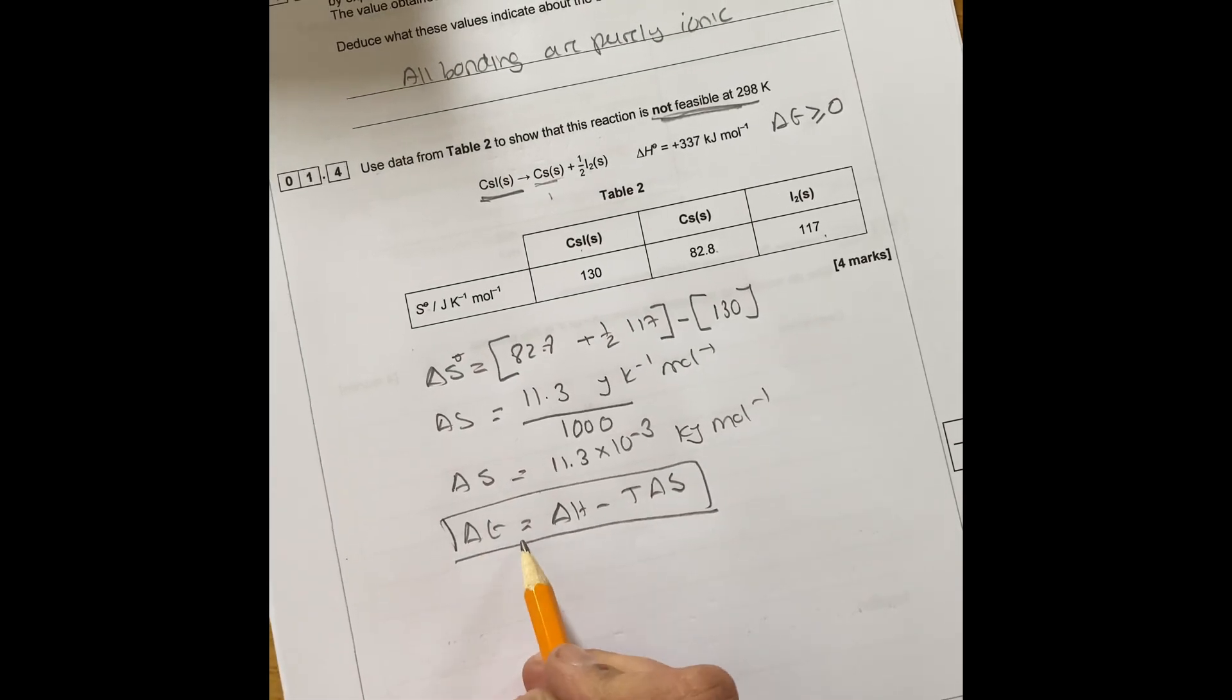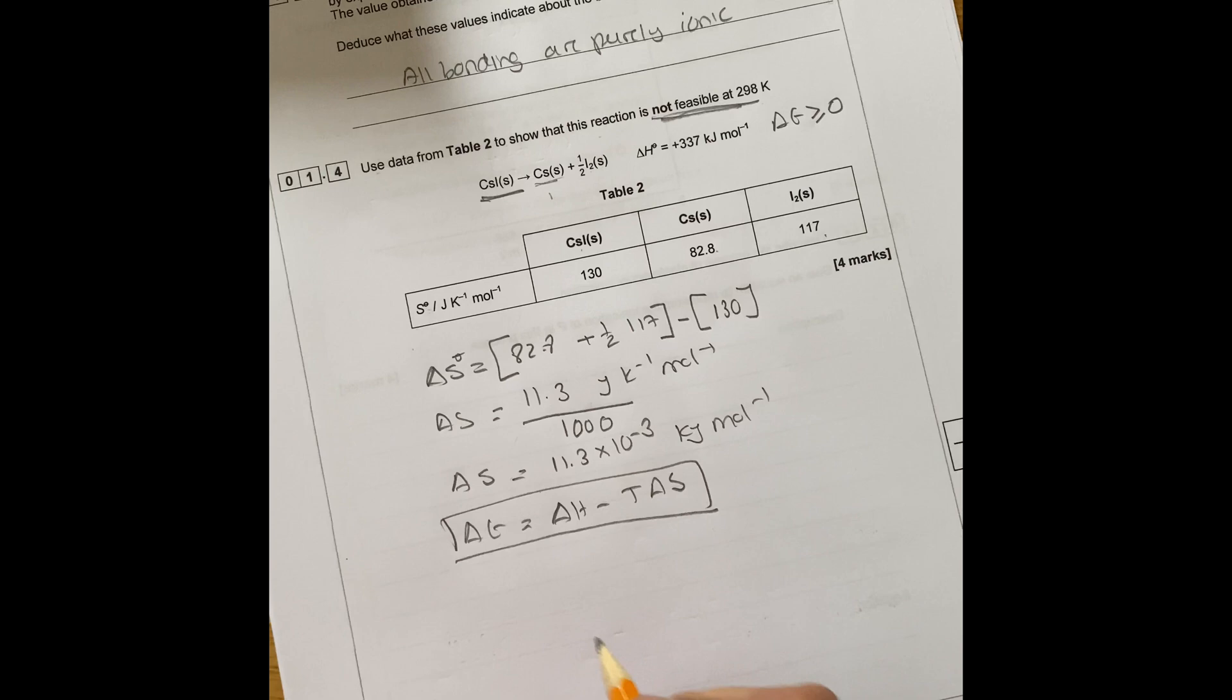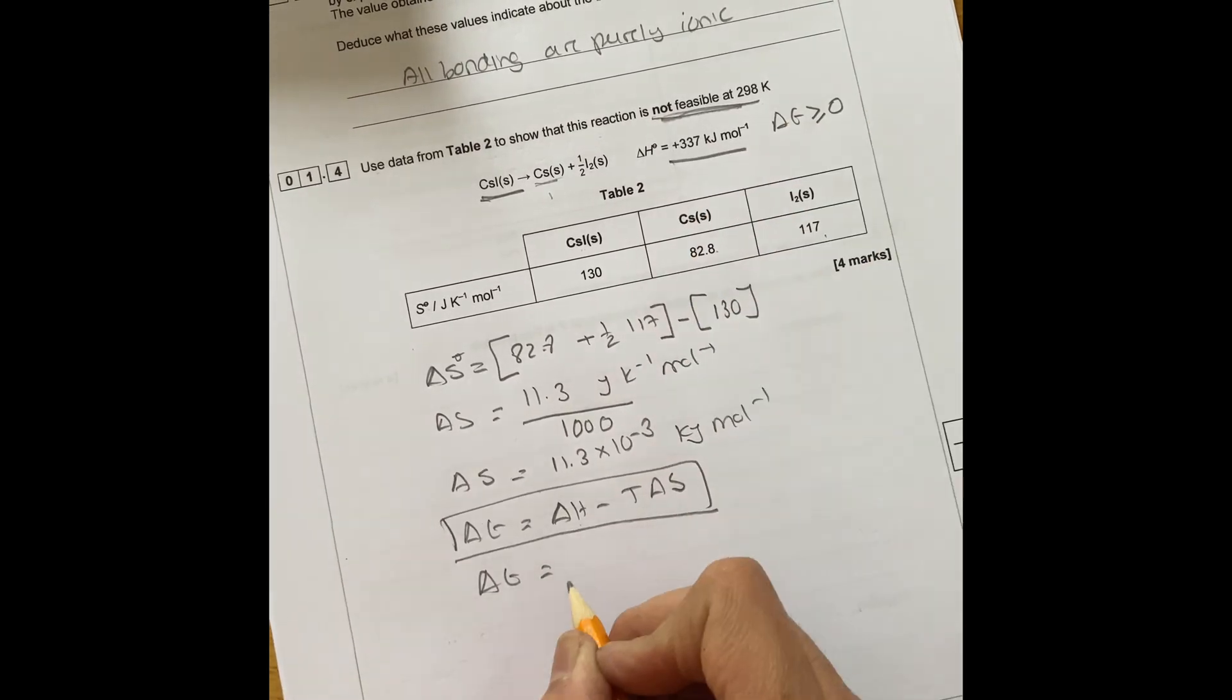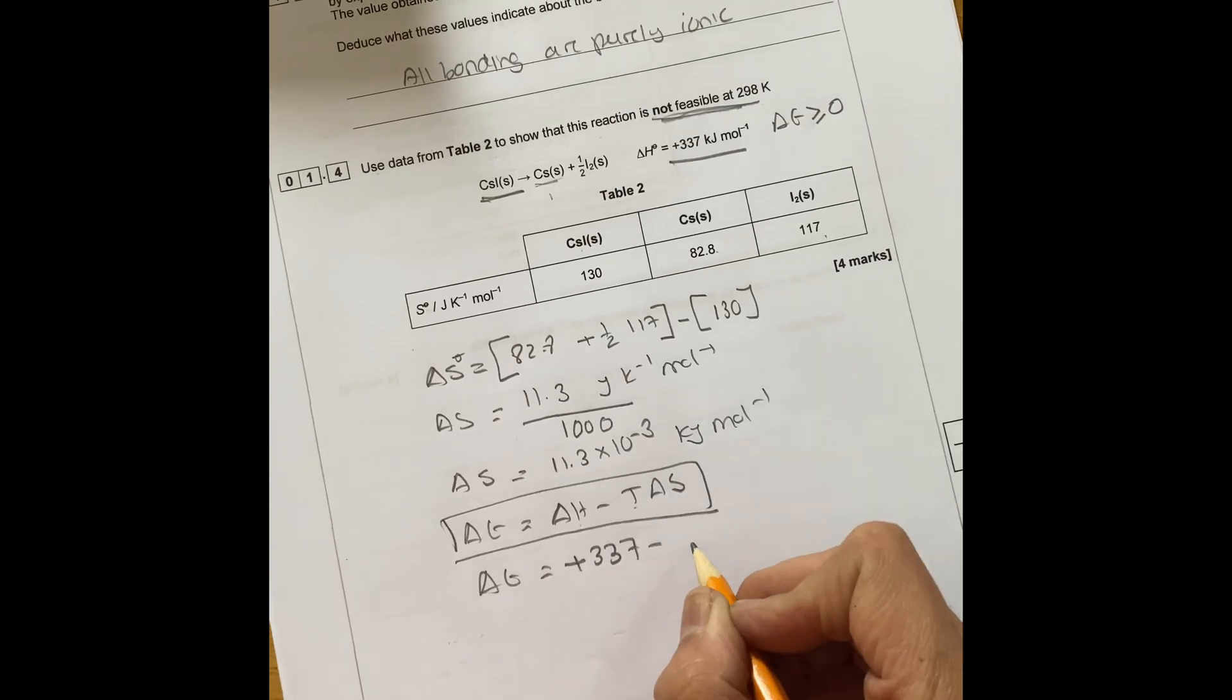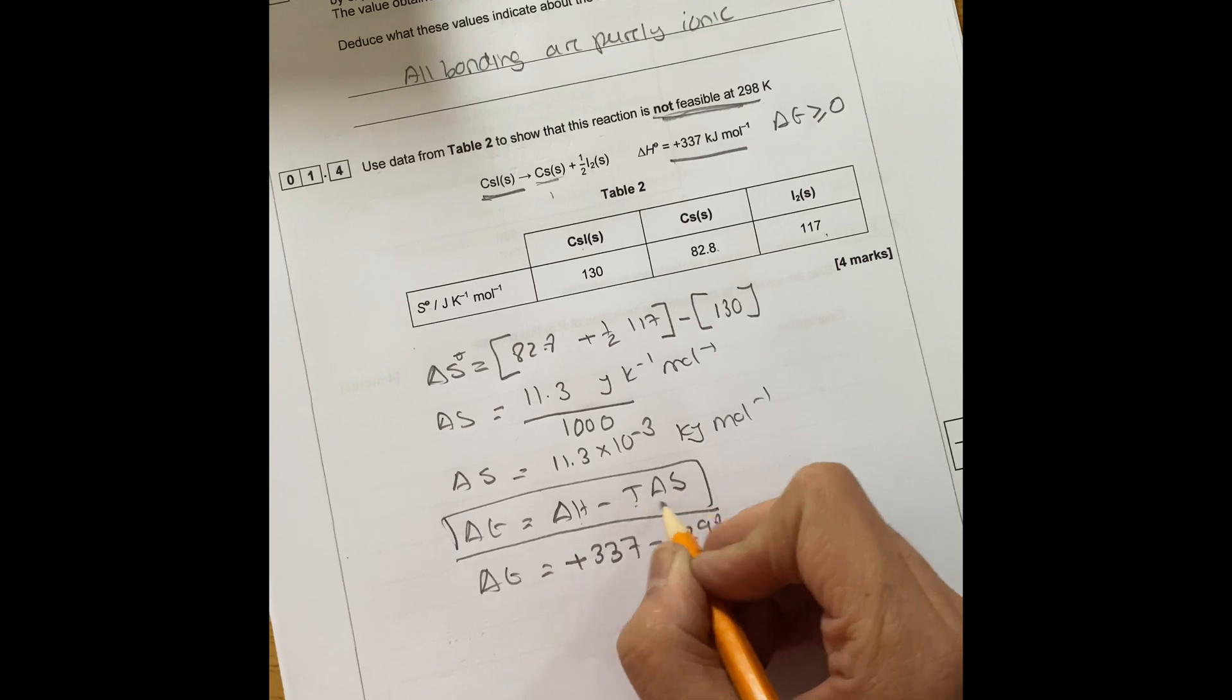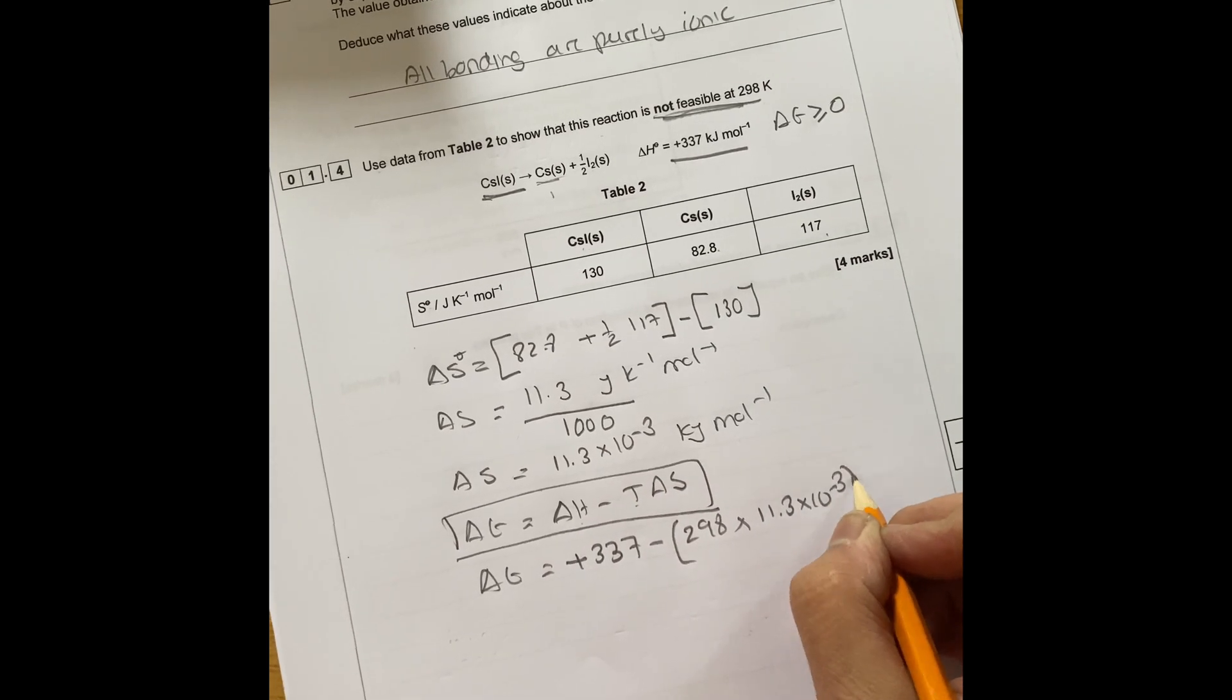So we need to work out delta G. So delta H, you've got the value there, plus 3.37 minus temperature is 298 Kelvin times delta S, which is worked out to be 11.3 times 10 to the minus three.